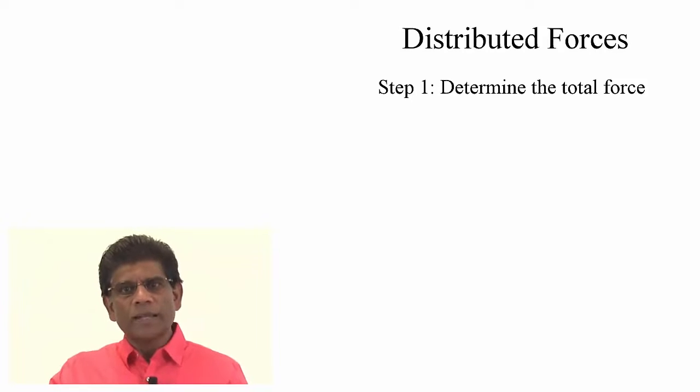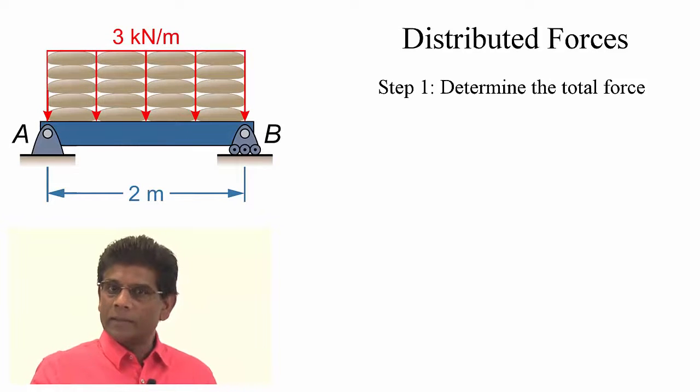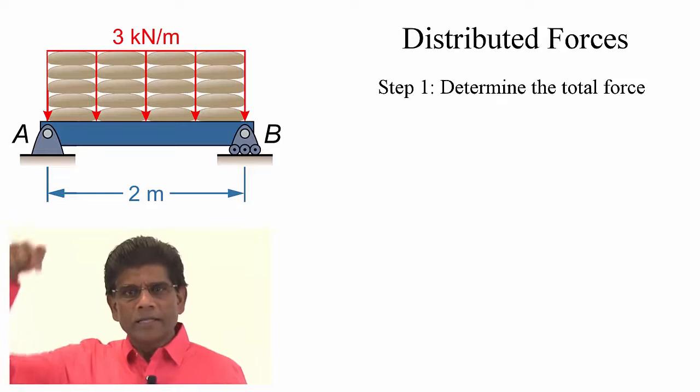It is easy to find the area when we deal with a uniform distribution like the one shown here. It is a rectangle. Finding the area of a rectangle is something we all know very well. Here the area is defined by multiplying the length of the beam and the intensity of the force.